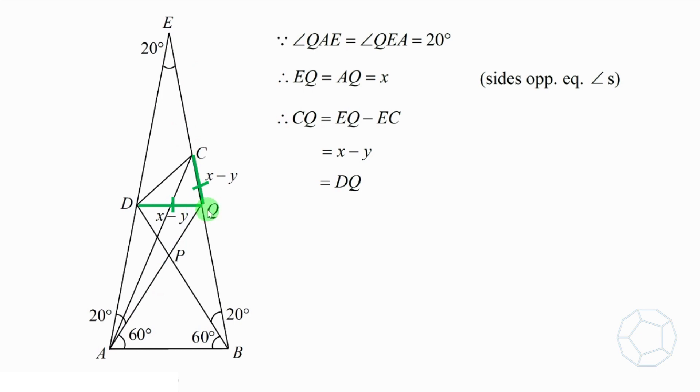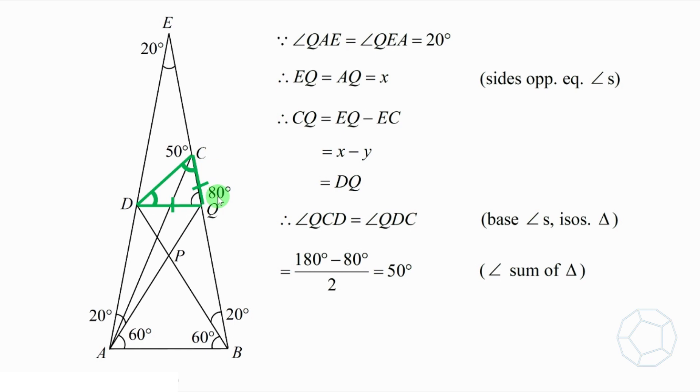Therefore, triangle QCD is isosceles. Using base angles isosceles triangle again, angle QCD and angle QDC are equal. We also proved that angle CQD is 80 degrees, therefore, by angle sum of triangle, the two angles are 50 degrees. Finally, because angle ACB is 30 degrees, which is found in the introduction, therefore, angle ACD is equal to 20 degrees.